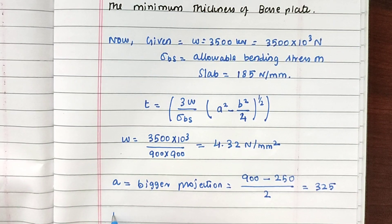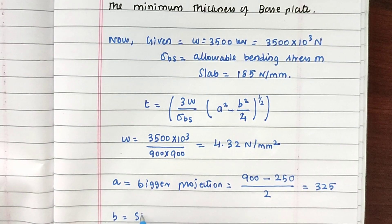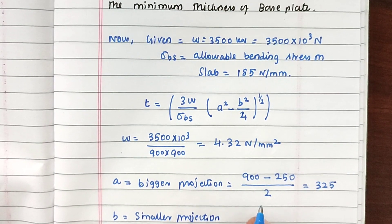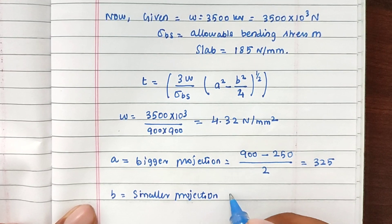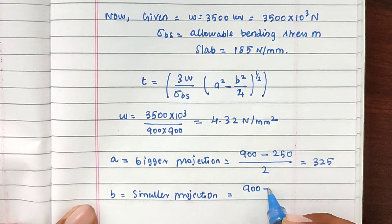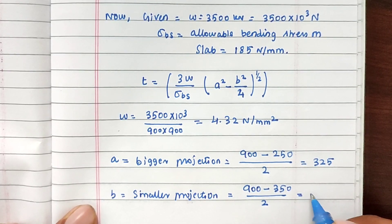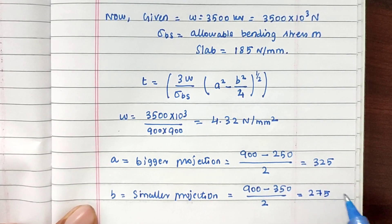Then B, smaller projection. Smaller projection is equal to 900 minus 350 divided by 2. For that we got the value of 275.